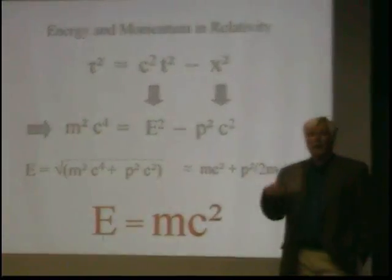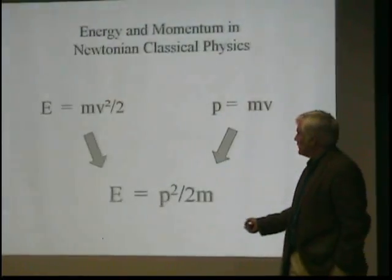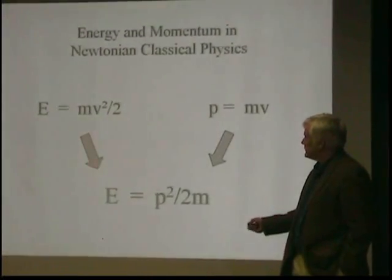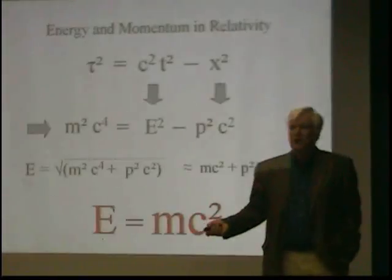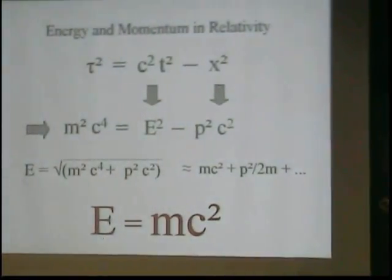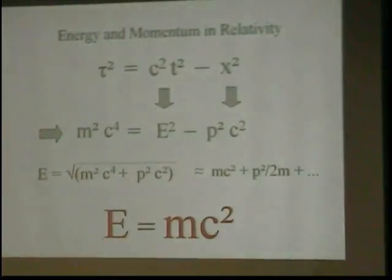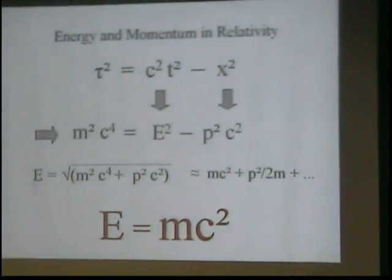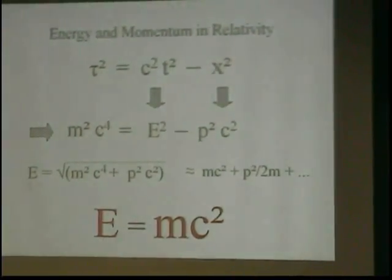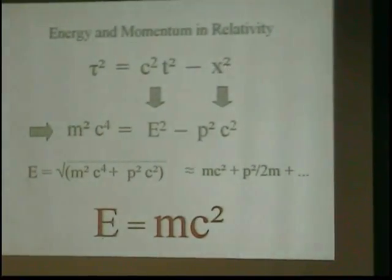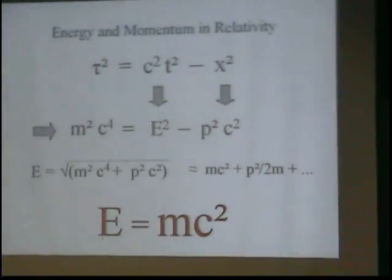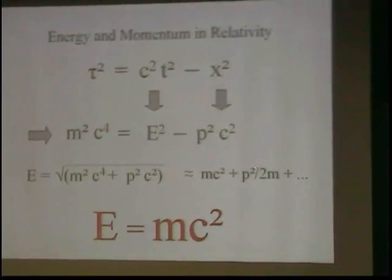How do we get a relationship between energy and momentum in relativity? This is what we had in classical physics: E is p squared over 2m. What do we do in relativity? Well, we remember Noether's theorem, which tells us that energy comes from the invariance of the laws of physics in time. Momentum comes from the invariance in space. So there must be a more symmetrical relationship between energy and momentum.